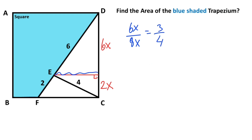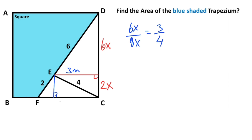That means if there's a 3m here, this length must be equal to 4m. After that, let's draw one more perpendicular line. If here is 3m, then here must also equal 3m, with m units remaining.